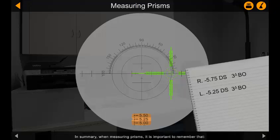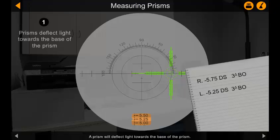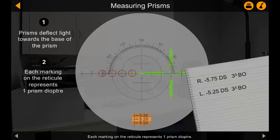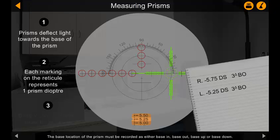In summary, when measuring prisms, it is important to remember that a prism will deflect light towards the base of the prism. Each marking on the reticule represents one prism diopter. The base location of the prism must be recorded as either base in, base out, base up or base down. The base in and base out positions are different for each eye lens.